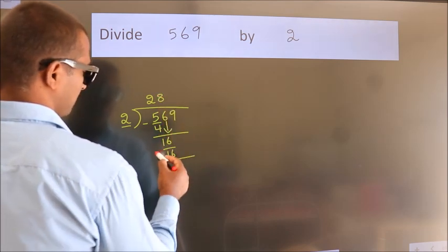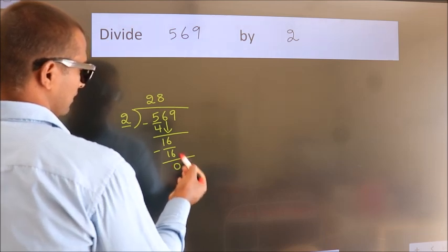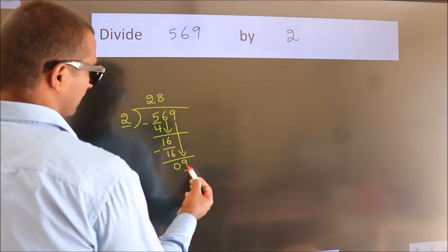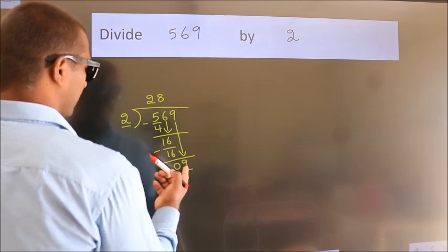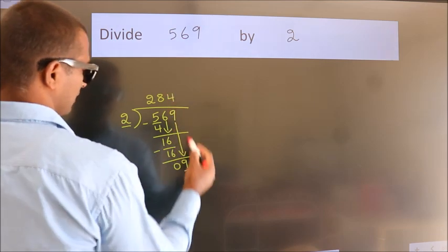Now we subtract. We get 0. After this, bring down the beside number. So 9 down. So 9. A number close to 9 in the 2 table is 2 4's 8.